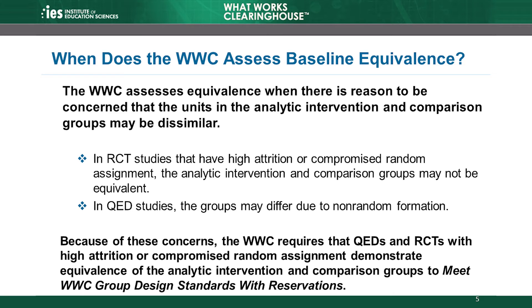Recall from the attrition module, Module 2, that bias is a systematic difference between the true impact of the intervention and the estimated impact, which can lead to incorrect conclusions about the effect of the intervention. The WWC assesses equivalence when there is reason to be concerned that the units in the analytic intervention and comparison groups may be dissimilar.